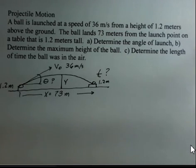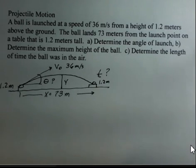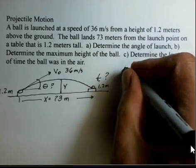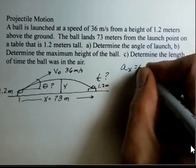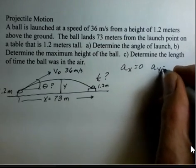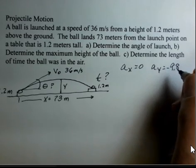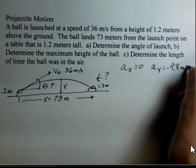For projectile motion problems, we're working with an x and a y. For projectile motion near the earth, if we ignore air resistance, then the acceleration in the x direction will be zero. And the acceleration in the y direction, I'm going to let down be the negative, so negative 9.8 meters per second squared.